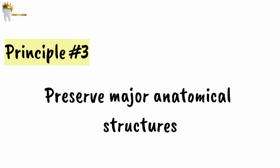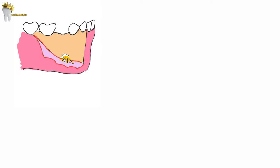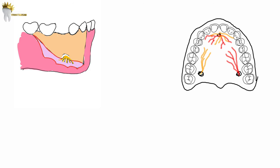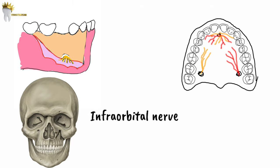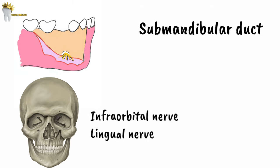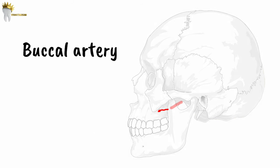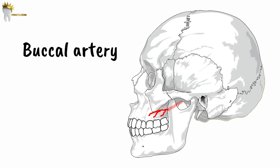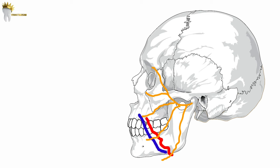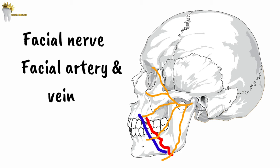The third principle is that the flap design and the incision should be made in such a way that we don't injure any major anatomical structure. Structures we might encounter in the oral cavity include the mental neurovascular bundle, palatal vessels from the greater palatine foramen and incisive foramen, nerves like the infraorbital nerve and lingual nerve, submandibular duct, parotid duct, and buccal artery. The buccal artery is of concern when making an incision to drain an abscess of the pterygomandibular space.